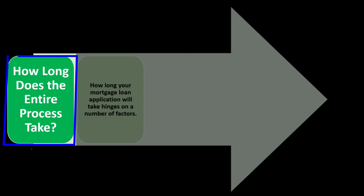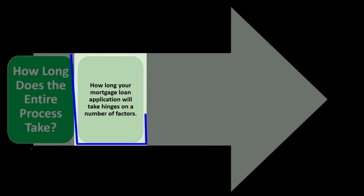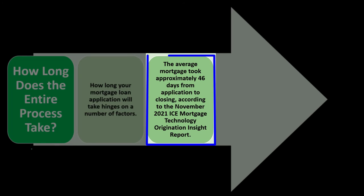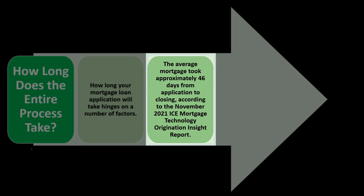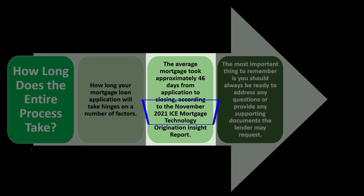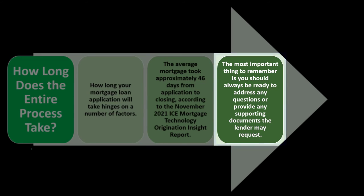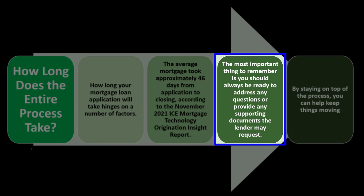How long does the entire process take? The average mortgage took approximately 46 days from application to closing, according to the November 2021 ICE Mortgage Technology Origination Insight Report. The most important thing to remember is you should always be ready to address any questions or provide any supporting documents the lender may request.